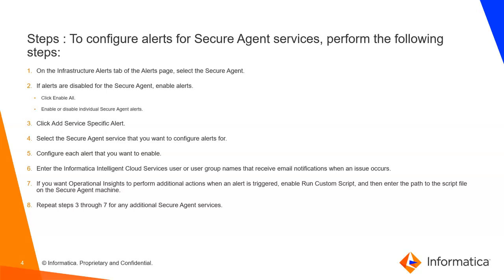You can configure each alert that you want to enable. Enter the Informatica Intelligent Cloud Services user or user group name that receives email notification when an issue occurs. So whenever you get an anomaly on your service, you can get a notification alert to that particular user's email ID. If you want Operational Insight to perform additional actions when an alert is triggered, you can also enable running custom scripts. This is an out-of-box option. Enter the path of that script file on your Secure Agent machine. You can repeat these steps for any additional Secure Agent services as needed.